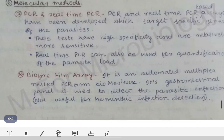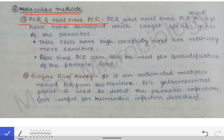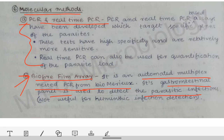Molecular methods can be applied across parasitology. PCR and real-time PCR are used for detection of different parasites. BioFire FilmArray — an automated multiplex nested PCR system — is a newer method; its gastrointestinal panel is used for detection of parasitic infections, with various panels available for different infection types. This completes the general diagnosis part of parasitology; understanding these principles makes diagnosing individual organisms much easier.